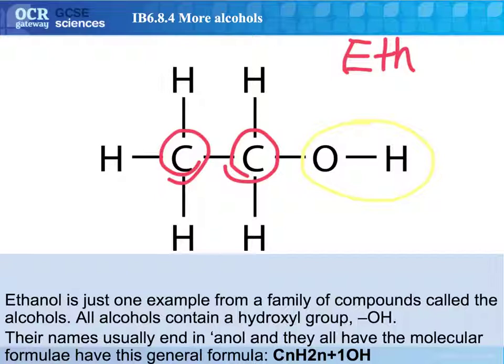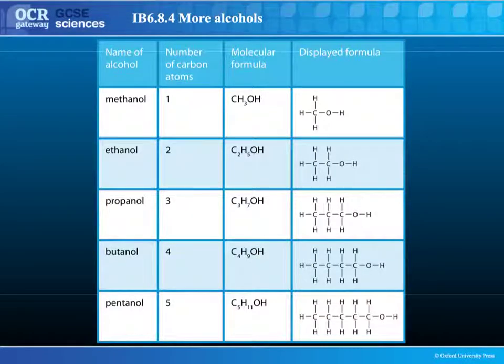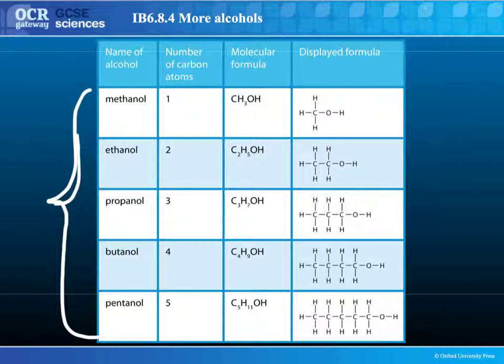All alcohols are given the suffix '-anol'. So this is ethanol. If it had one carbon it would be methanol, three carbons propanol, four carbons butanol, five carbons pentanol. Here are those first five alcohols: methanol, ethanol, propanol, butanol, and pentanol, along with their displayed formulas.